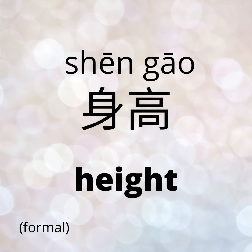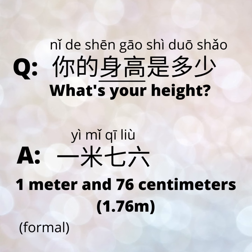For the formal versions, we need to learn some vocabulary. 身高 means height. So in a more formal setting, like in a doctor's office, they might ask you 你的身高是多少? Our answer is the same as before — we'll keep the answer in meters, so we could say 一米七六.